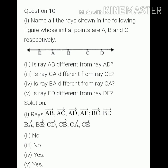The second part is, is ray AB different from ray AD? Means are rays AB and AD different? Answer is no. Because both have the same origin point A. Both are emerging from point A. So both rays are the same.